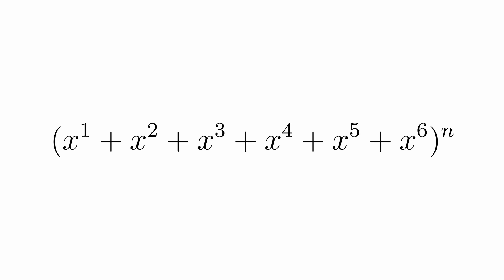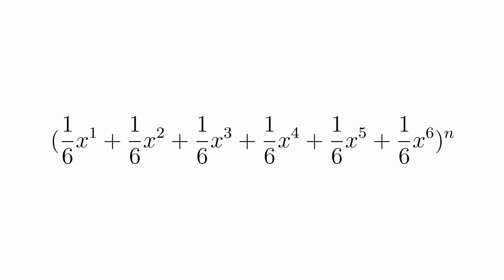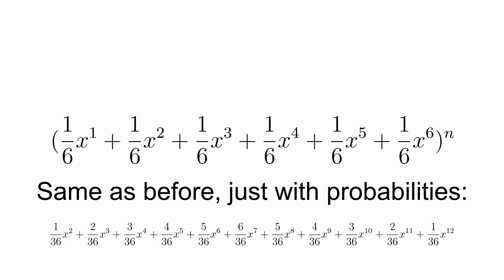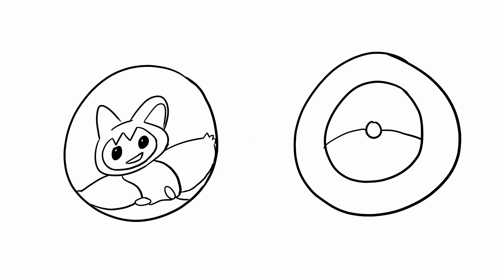Instead of giving the sheer number of ways to roll a given number, it even works with probability. Putting the odds instead and exponentiate will go straight to the probabilities of the sum, which can take care of maybe a weighted coin that shifts probabilities to have a 70% chance of heads.